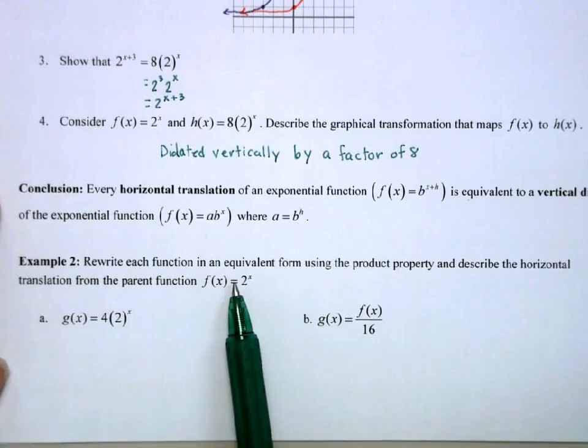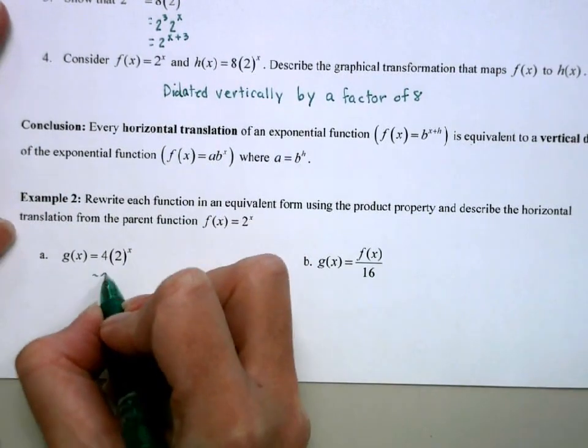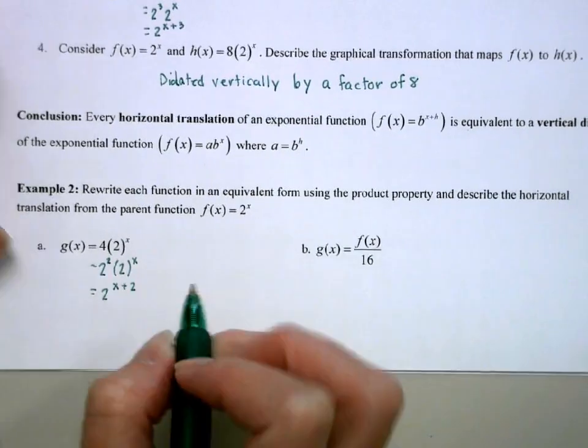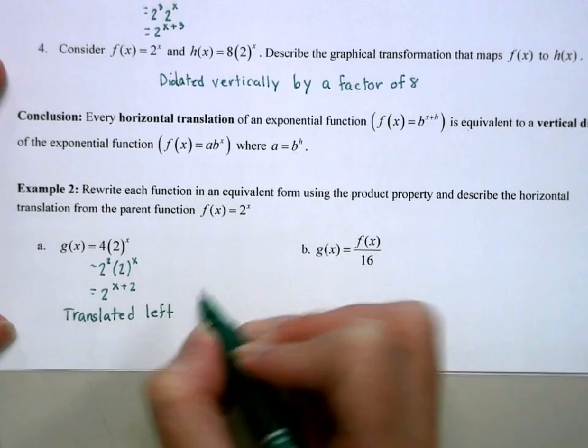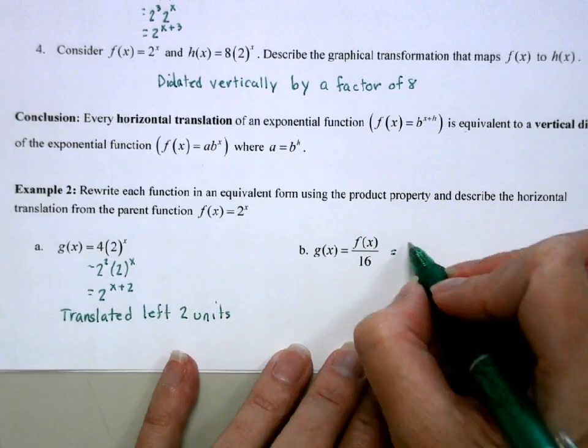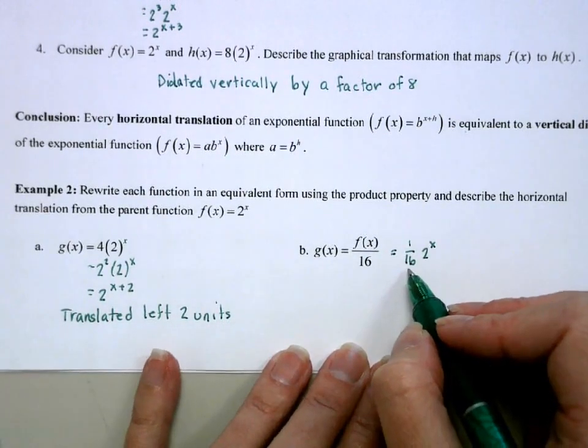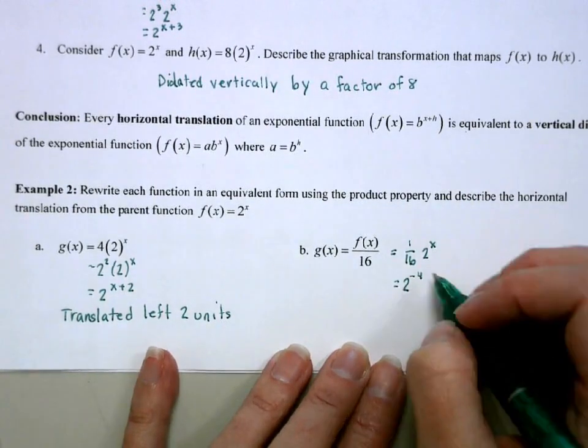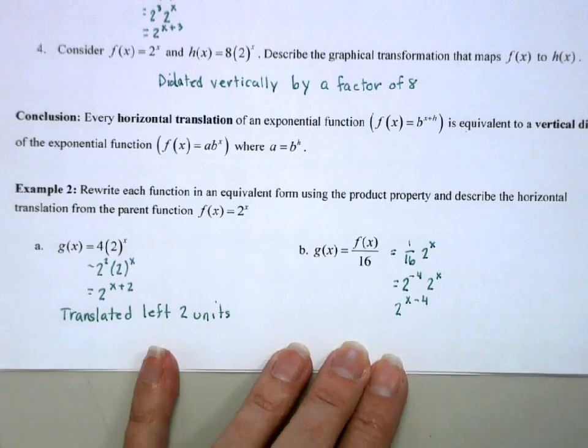So we're going to rewrite each in an equivalent form using the product property and describe the horizontal translation from the parent function 2 to the x. So I'm going to start by writing my 4 as 2 squared. So this is equivalent to 2 to the x plus 2, which means my graph is translated left 2 units because it's a plus. This would be the same as 1/16 times 2 to the x. So how do I express 1/16 as a power of 2? Well, 2 to the 4th is 16, so 2 to the negative 4th is going to be 1/16. So this would be 2 to the x minus 4, which means my graph would be translated to the right 4.